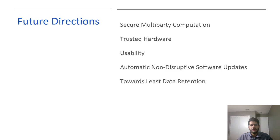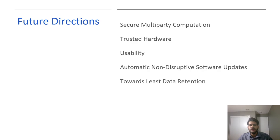Some important future directions we identify: first, storing data across multiple servers and using multi-party computation could make the attacker's job significantly harder, requiring them to compromise multiple servers to access sensitive data. Another promising direction is trusted hardware — encrypting sensitive databases, storing cryptographic keys using trusted hardware, and limiting records retrievable from a server. We also believe more research is needed to improve the usability of existing security technologies and to automate the software update process in a non-disruptive fashion. Finally, inspired by the principle of least privilege, we propose the principle of least data retention, encouraging organizations to retain the minimum amount of data needed for their operations.